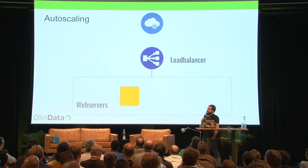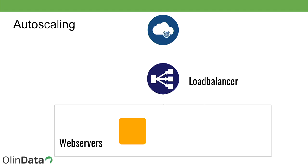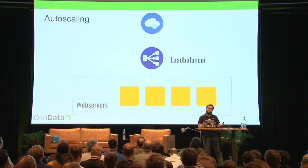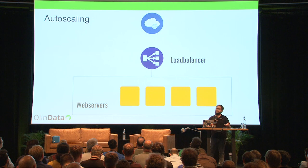By completely getting rid of state in our application and configuration drift, all of a sudden we're able to run our applications in parallel, maybe even in an autoscaling manner. With autoscaling groups, you have a flexible group of servers that you can scale up and down depending on certain metrics.